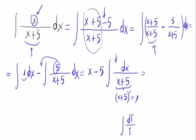So using the logarithm formula: if the derivative of the denominator appears in the numerator, it's the Neperian logarithm of the absolute value of the denominator plus c.